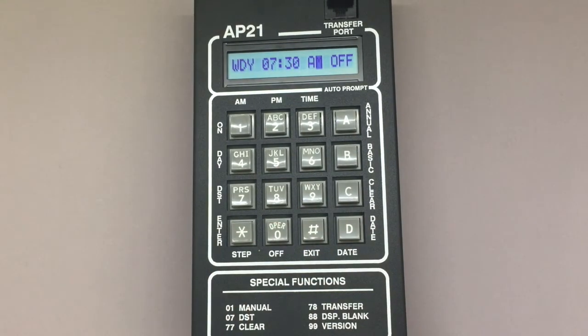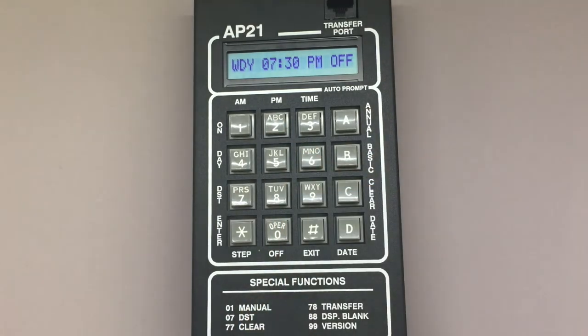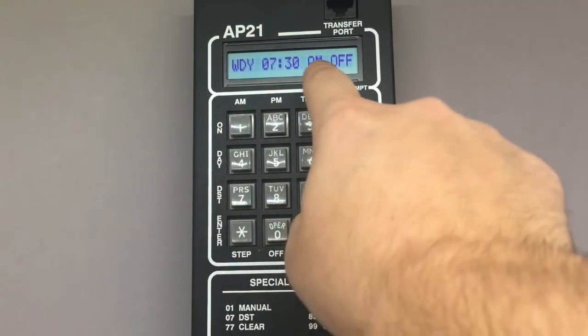The cursor will move to the a.m., p.m. designator. Pressing 1 or doing nothing will keep it on a.m., but pressing 2 will switch the designator to p.m., if that's what I wanted to do. But since I'm turning the flashers on at 7:30 a.m., I'm going to press 1 and then star.